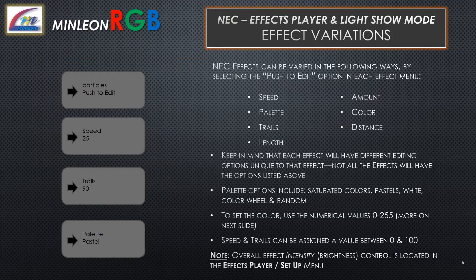Effect variations. Effects can be varied in the following ways by selecting the push-to-edit option under each effect menu: Speed, Palette, Trails, Length, Amount, Color, and Distance. Keep in mind that each effect will have different editing options unique to that effect — not all effects will have all the options listed. Palette options include Saturated, Pastels, White, Scrolling Color Wheel, and Random. To set the color, use numerical values 0 through 255. Speed and Trails can be assigned a value between 0 and 100. Please note, overall effect intensity control is located in the Effects Player setup menu.